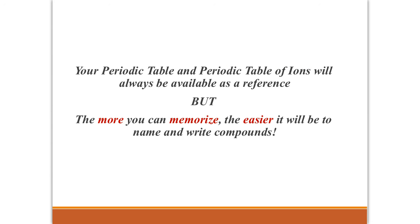So you're always going to have your periodic table and the periodic table of ions as a reference. But the more you can memorize on what the common charges are for the elements that we work with a lot, the easier it's going to be for you to name and to write compounds. So take the time to learn as many of these as you can. You'll get lots of practice, but really it just comes much more easily if some of this stuff is in your memory and you're not having to go back and look at the paper every single time when you're trying to write a formula or come up with a name.